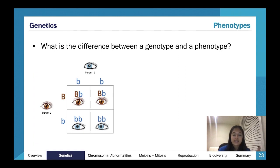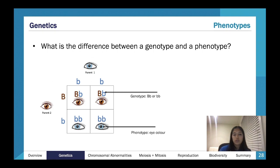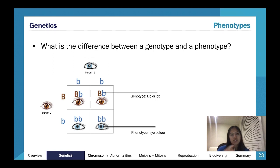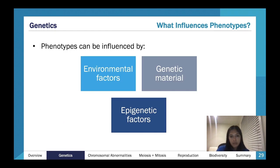The genotype is the actual allele combination — heterozygous, homozygous dominant, or homozygous recessive. The phenotype is what is expressed outwardly. A heterozygous person and a homozygous dominant person would express the same phenotype — brown eyes — even though their genotypes are different. Genotype is the actual genes; phenotype is what you see on the outside.